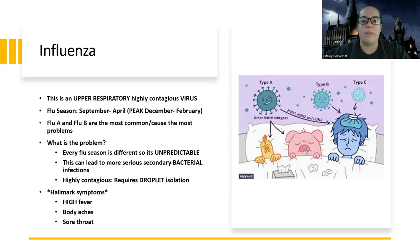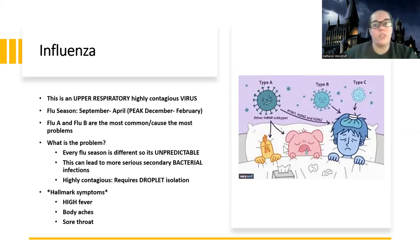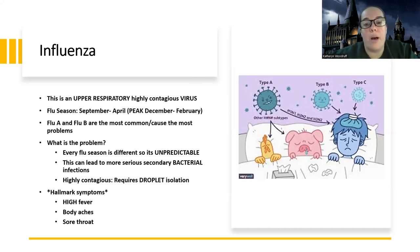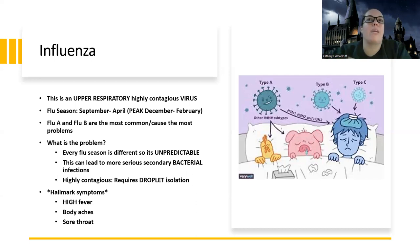We're seeing a lot of flu this year, but every year is a little bit different. Flu A and Flu B are the most common and cause the most problems. Usually when they swab you at the emergency room, they're checking you for A and B. The problem with the flu is that every flu season is different, so it's unpredictable. They do the best they can to make a flu vaccine that will help cover, and it's not there to stop you from getting the flu — it's there to stop you from dying from the flu. It can also lead to a more serious secondary bacterial infection, just like we discussed with acute sinusitis.